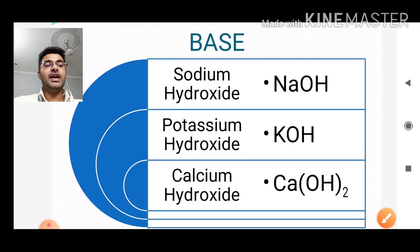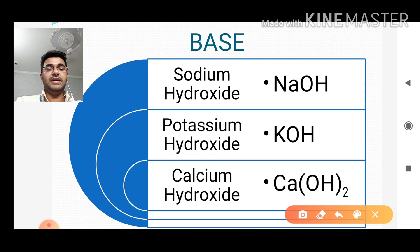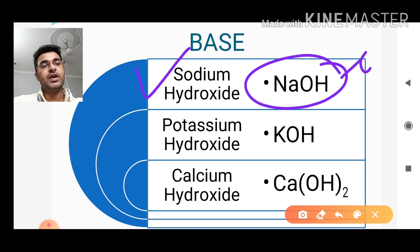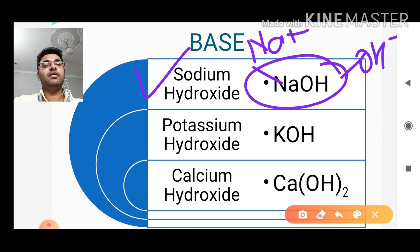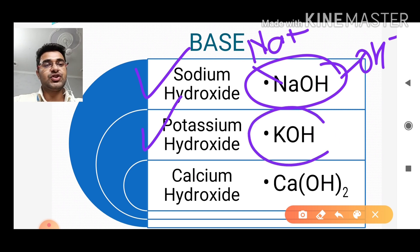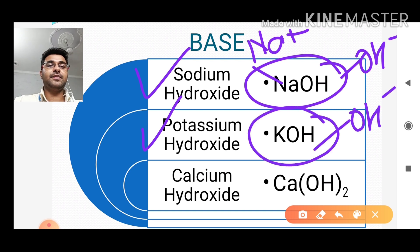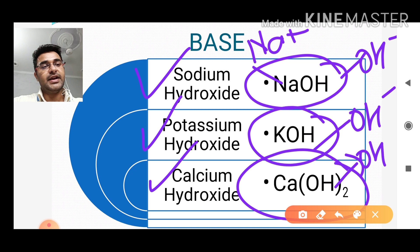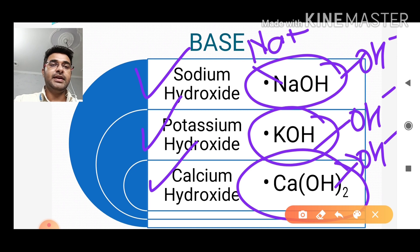Here we have some common examples of bases. First is sodium hydroxide NaOH — it gives OH⁻ and Na⁺. Second is potassium hydroxide KOH — again we obtain hydroxide ion. Third is calcium hydroxide Ca(OH)₂ — again we obtain hydroxide ion. It means all bases have one thing in common: the hydroxide ion, just as all acids have the hydrogen ion in common.